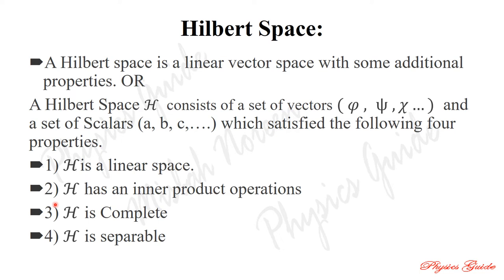The definition of Hilbert space: a Hilbert space H consists of a set of vectors — psi, phi, and chi — and a set of scalars — a, b, c, and so on — which satisfies the following four listed properties. Then we can say that this is a Hilbert space.